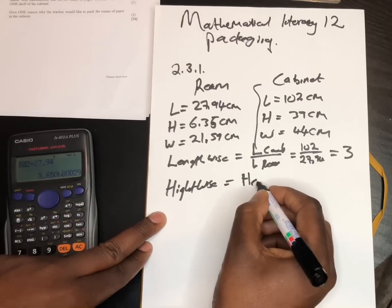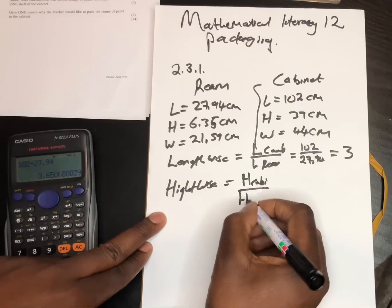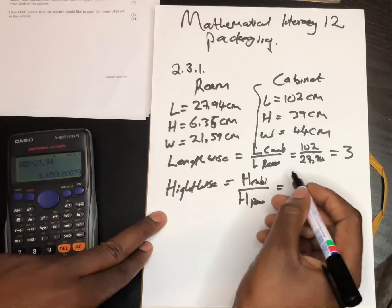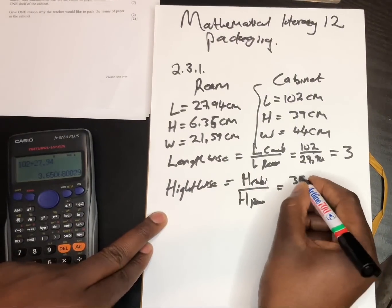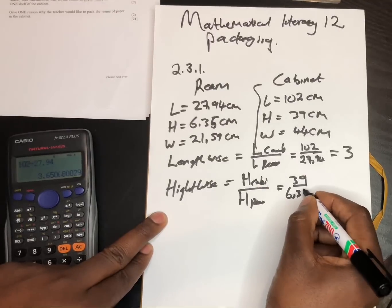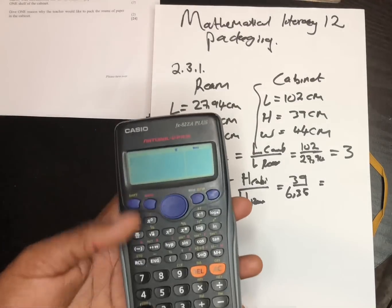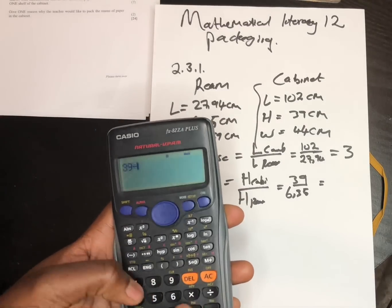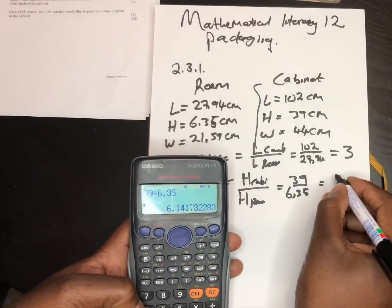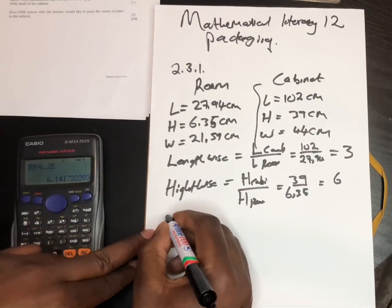Next is height: the height of the cabinet divided by the height of a ream — 39 divided by 6.35. The answer is 6. We round it down, so we can fit 6 reams along the height.